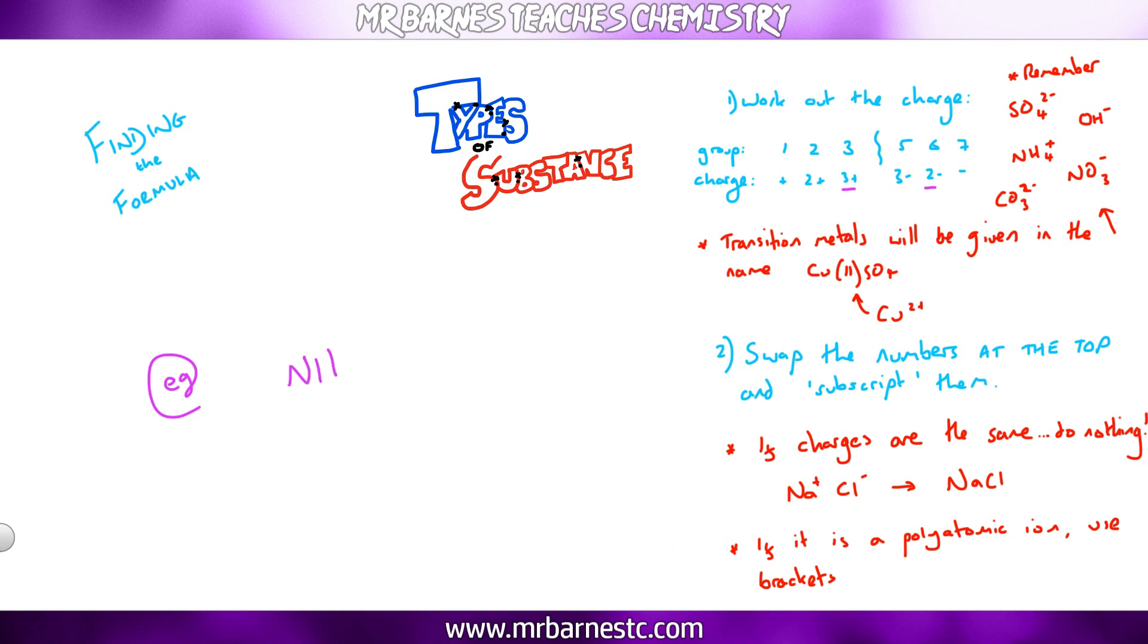Another example, ammonium NH4+ reacting with a carbonate CO3 2-, I take my 2 from the top right, I move it down to the bottom left. I've now got a 2 next to my 4, it looks weird, so I have to put a bracket there. So it's NH4 in brackets 2, CO3.